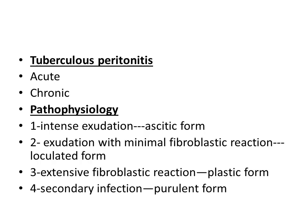Tubercular peritonitis may be acute or chronic. The pathophysiology involves intense exudation, which leads to the ascitic form of tubercular peritonitis. Exudation with minimal fibroblastic reaction produces ascites, which may be loculated and localized rather than generalized. Sometimes there is extensive fibroblastic reaction, resulting in the plastic or adhesive type of tubercular peritonitis. If there is secondary infection, it will be the purulent form of tubercular peritonitis.